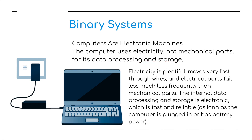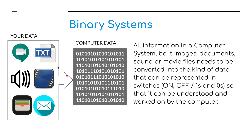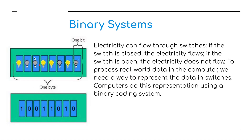Electricity is plentiful, moves very fast through wires, and electrical parts fail much less frequently than mechanical parts. The internal data processing and storage is electronic, which is fast and reliable, as long as the computer is plugged into power or has a battery. Your data — whether that's messages, text, sound, movies, your Apple wallet, or emails — all of it gets converted into binary values, into zeros and ones. We have here what they call a byte of information. Each of these blue rectangles we can call a bit. There are eight bits, which equals a byte — eight bits in one byte.